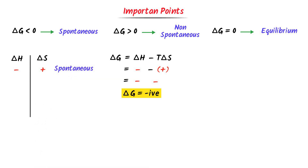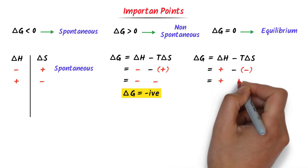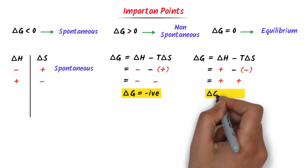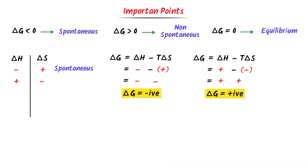Secondly, let ΔH be positive and ΔS be negative. Using ΔG = ΔH − T·ΔS, we have positive minus T times negative. Minus times negative is positive. So we get positive plus positive. Adding two positive numbers gives a positive number, so ΔG is positive. Therefore, when ΔH is positive and ΔS is negative, it is a non-spontaneous process.